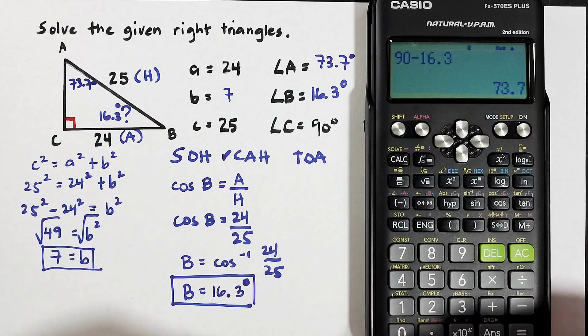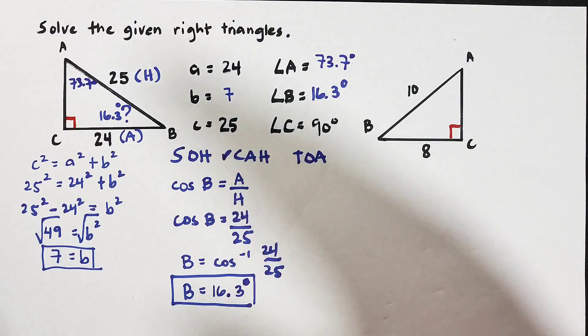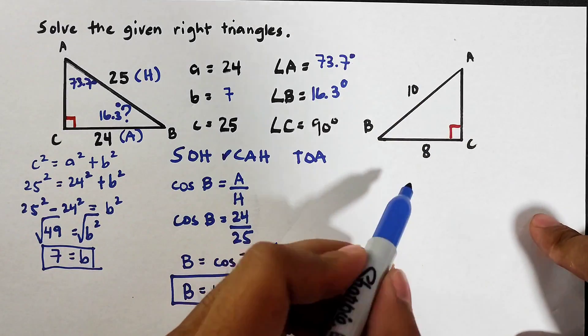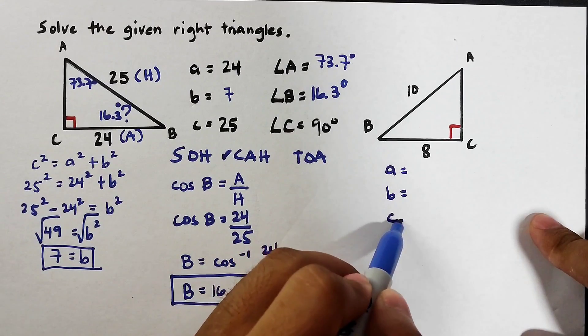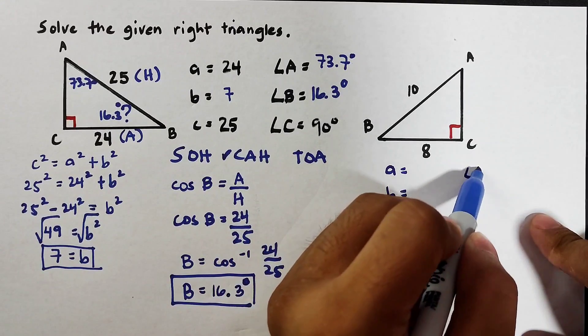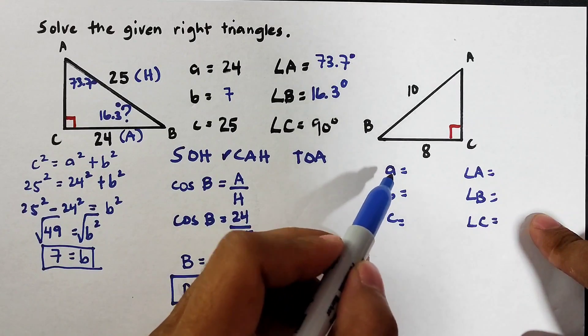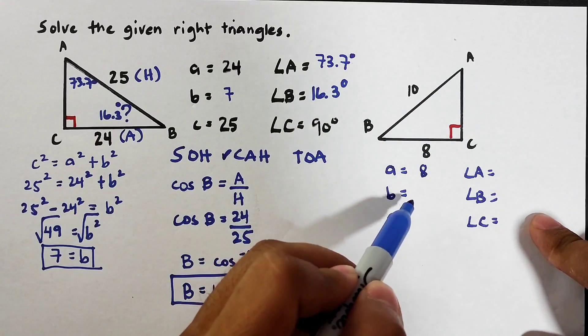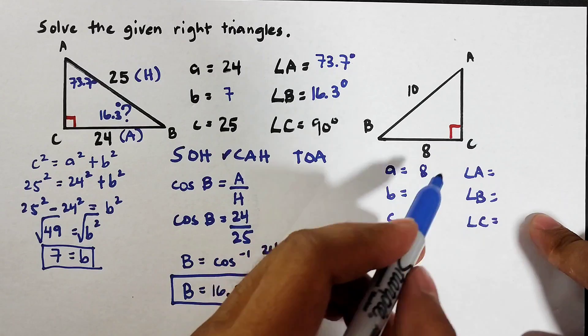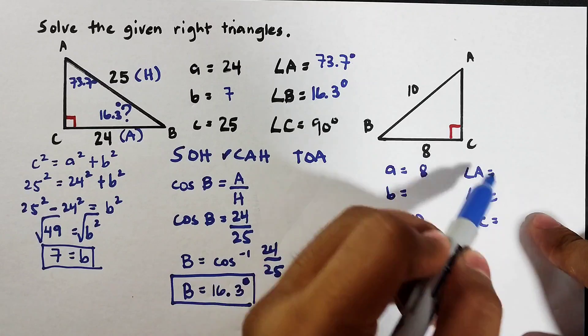I hope you learned something from this video on how to solve right triangles. And for this case guys, I want you to solve for this right triangle. Solve for side a, b, c, angle A, angle B, and angle C. Your side a is 8, your side b is missing, your side c is 10, and as for the angle, your angle C is 90.